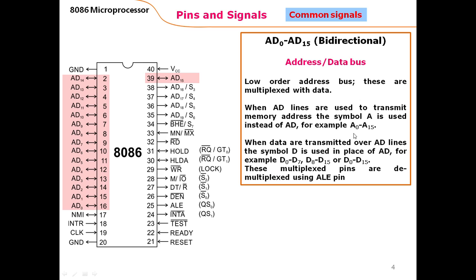The address bus for the 8086 microprocessor is 20 bits, but the 16-bit lower address is provided through these 16 pins designated A0 through A15. When these pins are used to transmit data, the symbol 'D' is used in place of 'AD' — 'AD' means address/data while 'D' just means data. D0 through D7 represents the least significant 8 bits of data, D8 through D15 the most significant 8 bits, and D0 through D15 represents the full 16-bit word of data.